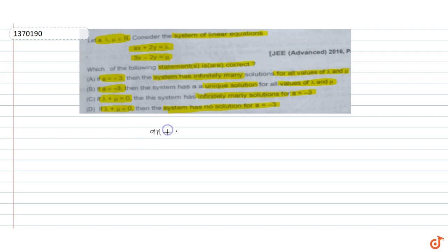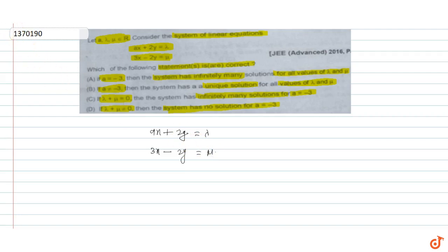The system of equations is: ax + 2y = λ and 3x − 2y = μ. Now we analyze the unique solution condition for this system.